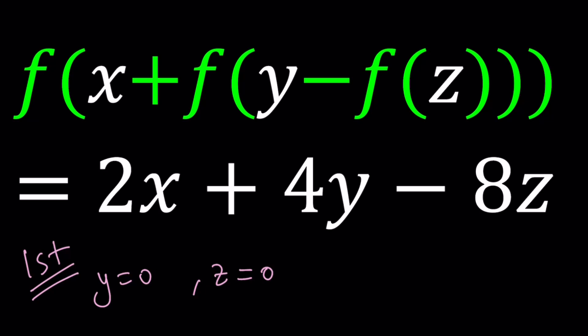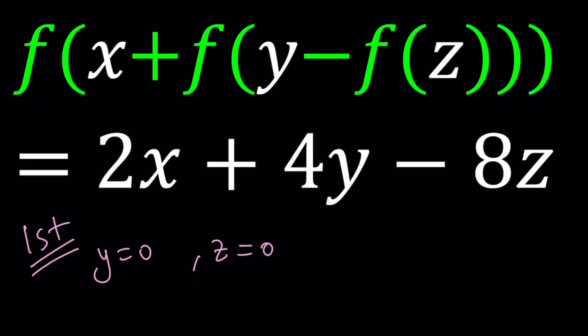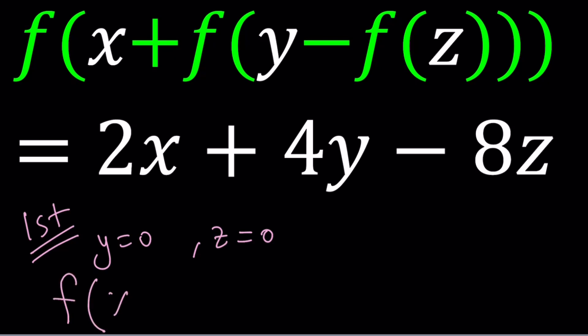Here, we have a lot of freedom because we have three variables x, y, z. So we can really play with this. So if you do that, you're going to get the following: f of x plus f of 0 minus, which is going to give you a negative f of 0, right? 0 minus f of 0. And then we kind of need to close all the parentheses. And this is supposed to equal, since y and z are both 0, this is actually going to equal 2x.